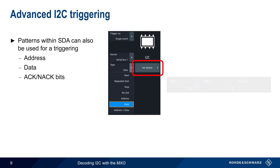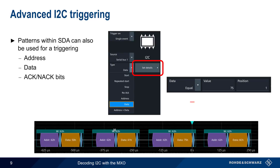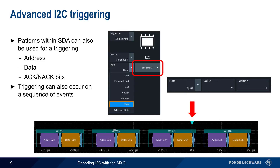Here, we're configuring the MXO to trigger when it sees a frame containing 0x75 as its first data byte. In addition to single events, the MXO can also trigger on a sequence of events. Please see the user documentation for more details on how to configure a sequence-based trigger.